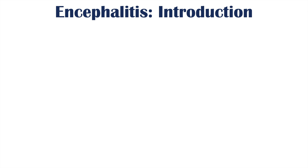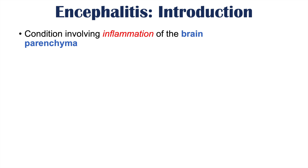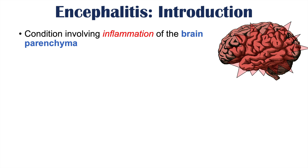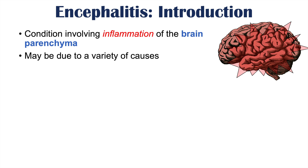Before we get into the signs and symptoms, let's talk about what encephalitis is. It is a condition involving inflammation of the brain parenchyma, so the brain tissue itself becomes inflamed. If we look at the word encephalitis, 'itis' means inflammation and 'encephal' refers to the brain, so encephalitis means brain inflammation.